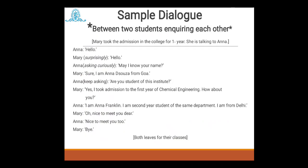Now I am going to present a sample dialogue so you will have a clear idea of how a dialogue should be formed. This is a conversation between two students enquiring about each other. First, I provide a background in square brackets: 'Mary took admission in the college for first year. She is talking to Anna.' After reading this background you can prepare your mind for what is going on. Anna says 'hello', and Mary, surprisingly, says 'hello' — she is very new to this college, so you can use emotions written in brackets.